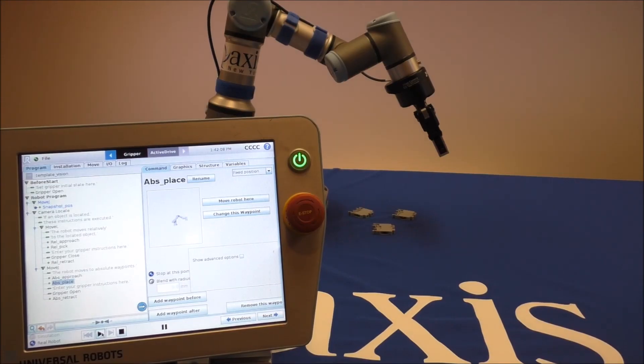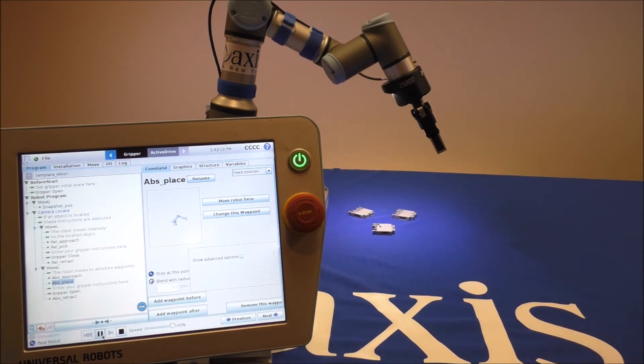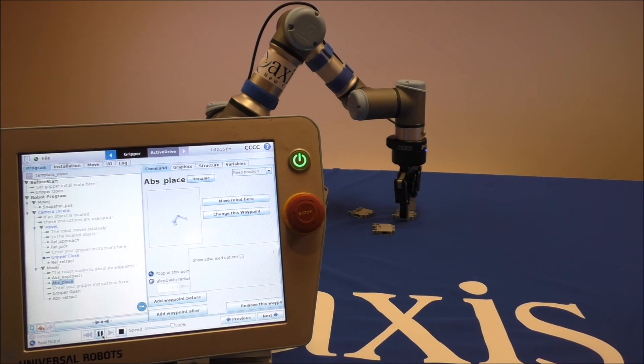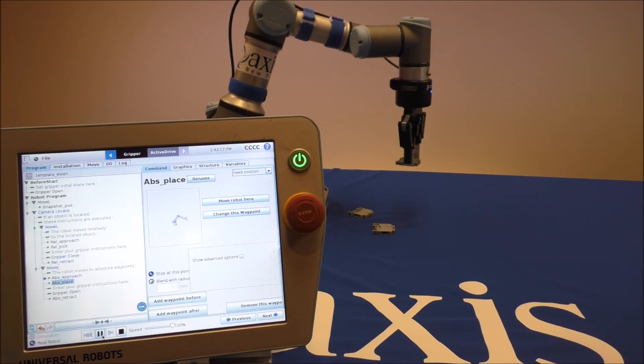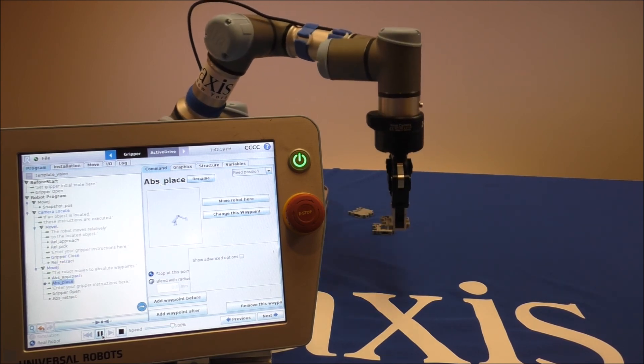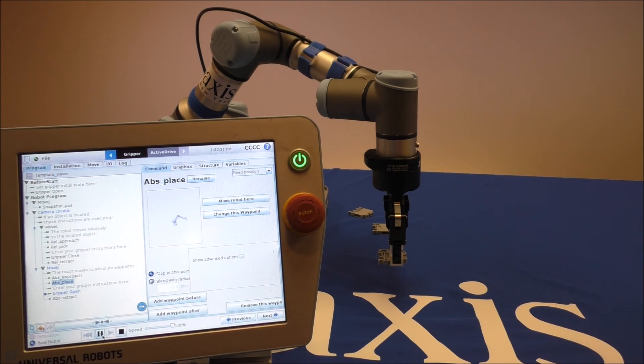Now that we have all the positions created, I've placed some parts in the work area and I can go ahead and run the program. So now with very minimal setup, the robot is picking with the assistance of vision.